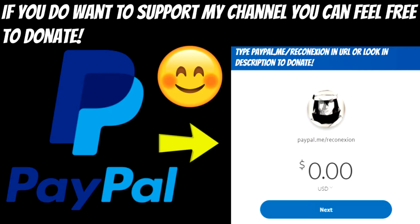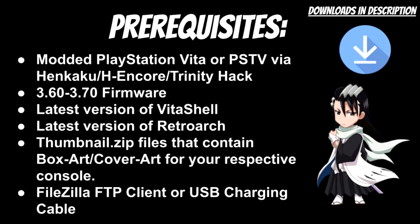With that stated out of the way, we can go ahead and start talking about the prerequisites and things you'll need for this video. You'll need a modded PlayStation Vita or PSTV using either the Henkaku, HRCore, or the new Trinity hack that was released not too long ago. Your system needs to be on firmware between 3.60 or 3.70 to run those exploits. You'll also need the latest version of VitaShell, the latest version of RetroArch, and a file called thumbnail.zip that contains your box art or cover art for your respective console.